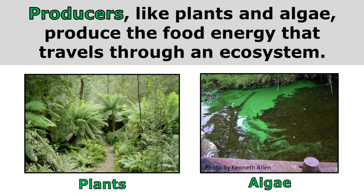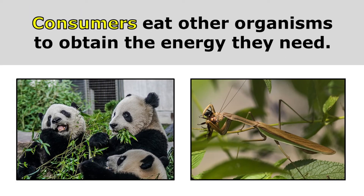Producers, like plants and algae, produce the food energy that travels through an ecosystem. Consumers eat other organisms to obtain the energy they need. Up until now we've just talked about consumers generally, but there are actually words to describe types of consumers based on what they eat.